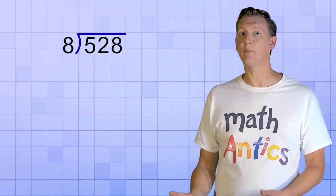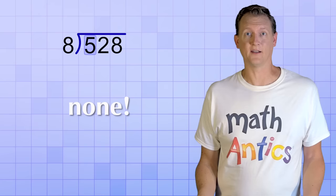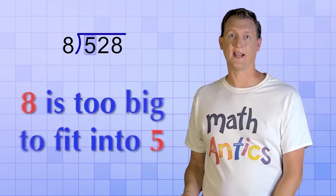Now let's solve the next example. And right at the start, you'll see we have a bit of a problem. When we ask, how many 8's does it take to make 5 or almost 5? The answer is none. And that's because the first digit, taken by itself, is less than the divisor. 8 is too big to divide into 5. So what do we do?